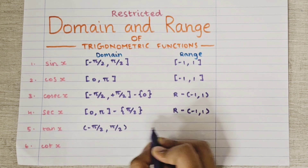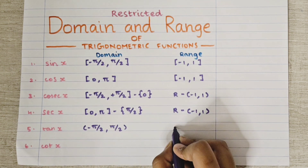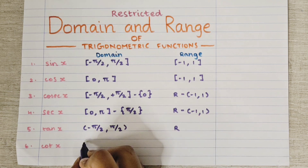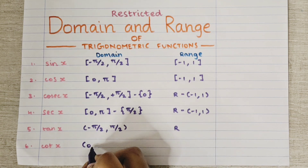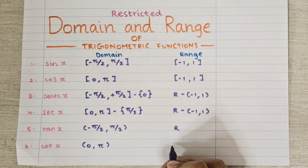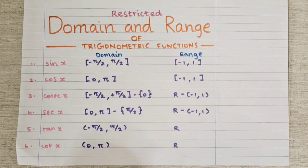For tan x, the domain is the open interval (-π/2, π/2) and the range is all real numbers. For cot x, the domain is the open interval (0, π) and the range is all real numbers.